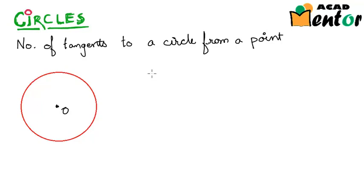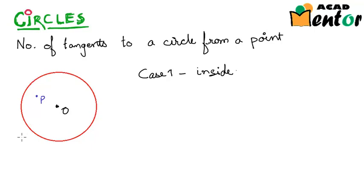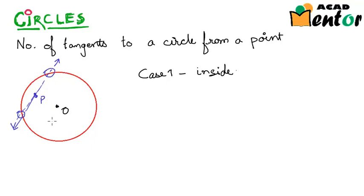Case one is when the point is inside the circle. Let's say we have a point P somewhere inside — do you think there's a possibility of a tangent? Let me draw a line passing through point P. We see that it cuts the circle in two distinct points and is not a tangent.